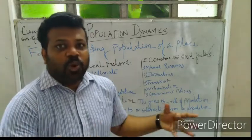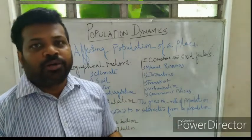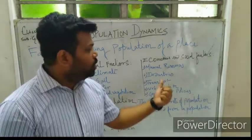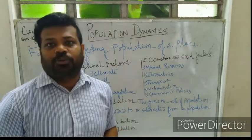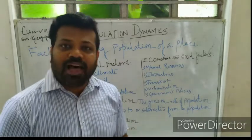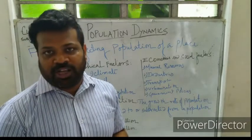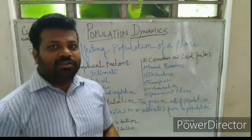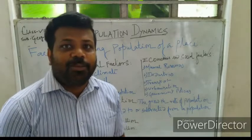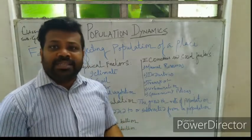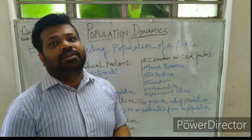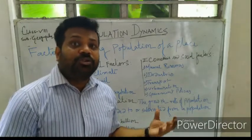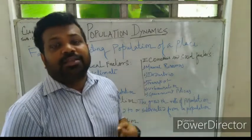Next is transport. If there is no railway or road network, people would not want to live there. Places well connected with transport will have high population density, while places with poor transport networks will have low population density. Next is urbanization — people prefer to live in urban areas, big cities, because they have facilities of medical care, education, and everything. Urbanization is also a factor affecting population.